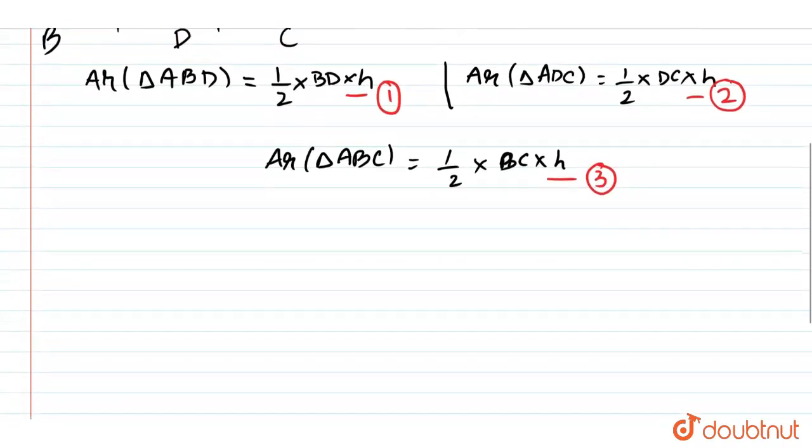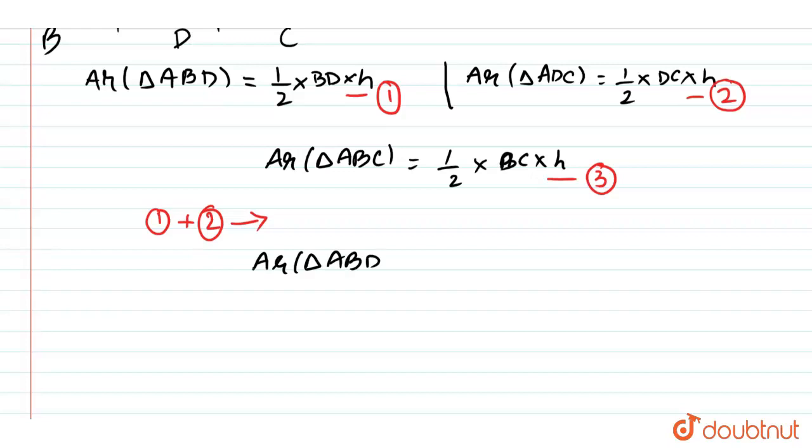Now, let us take these three equations we have got and solve it, which is adding one and two. So this would result in area of triangle ABD plus area of triangle ADC. So this would be half into BD into H plus half into DC into H.